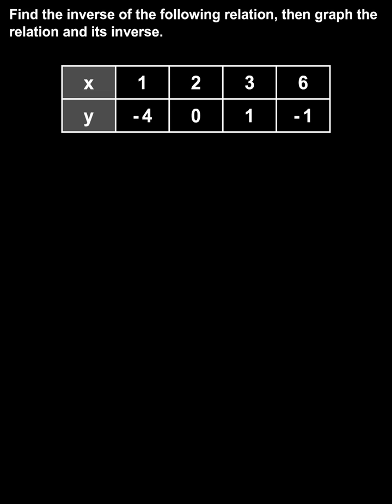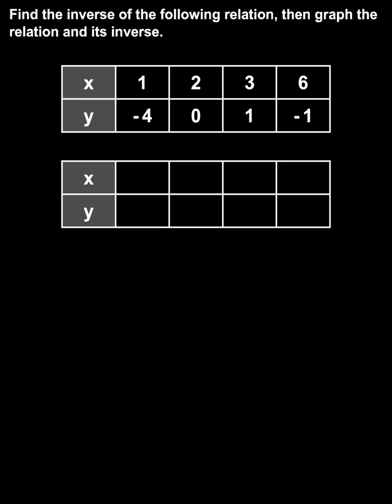To find the inverse of a relation, we simply switch the x and y values in each point. In other words, the point (1, -4) becomes (-4, 1), the point (2, 0) becomes (0, 2),